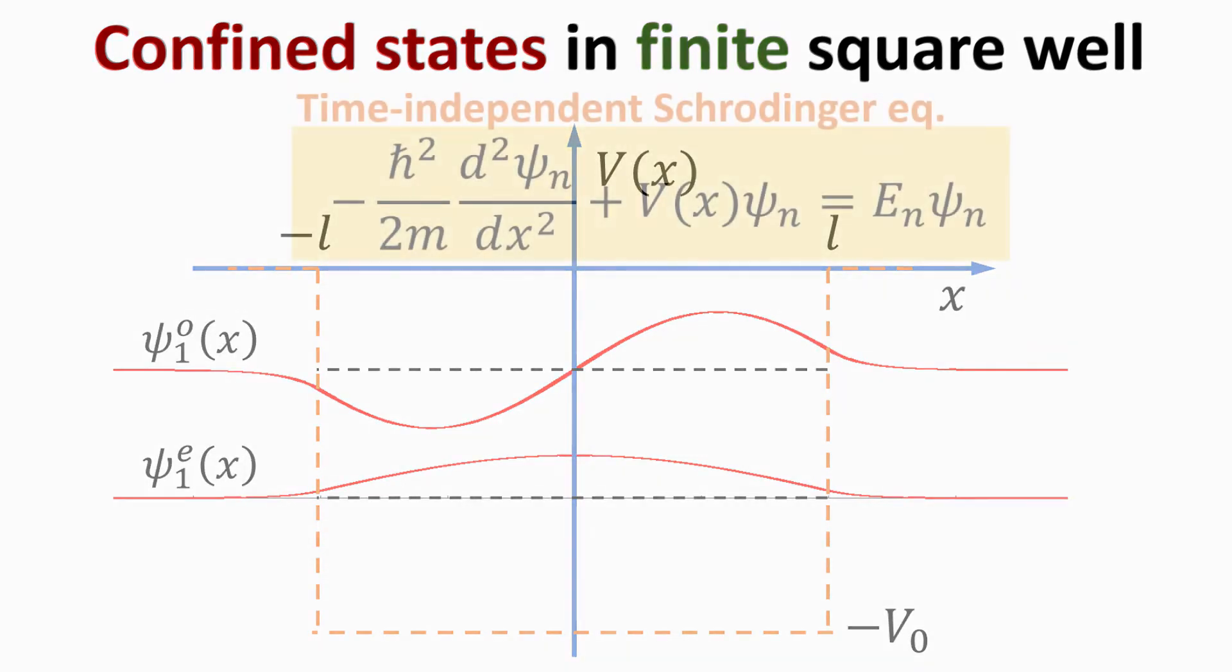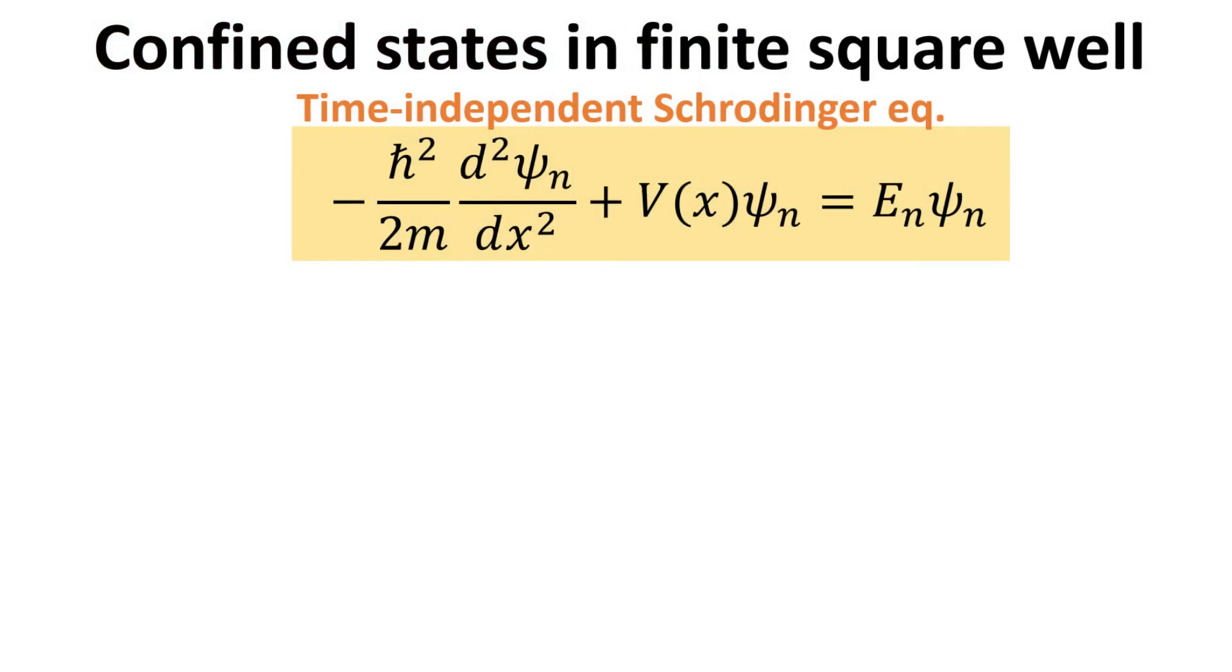Let's begin. Since we are dealing with a time-independent potential, the particular solution to the Schrödinger equation consists of stationary states, which can be constructed from the time-independent Schrödinger equation by utilizing the method of separation of variables. If you are not familiar with this method, please refer to our previous videos in this playlist.